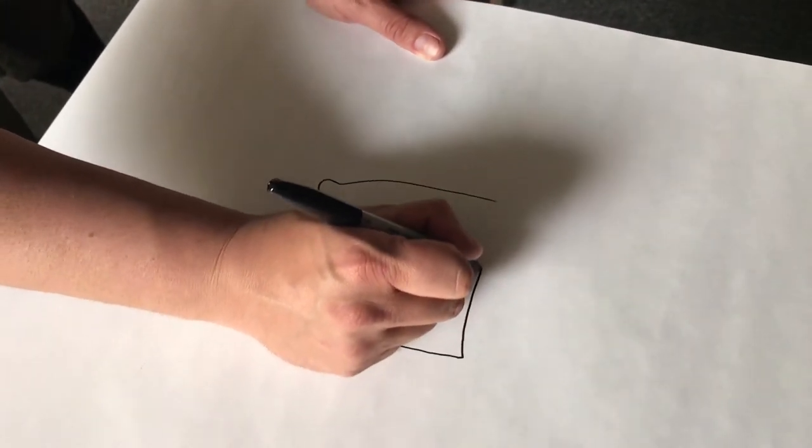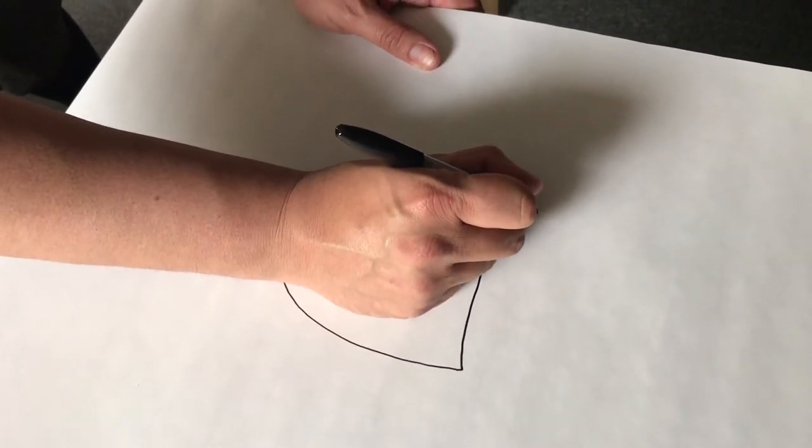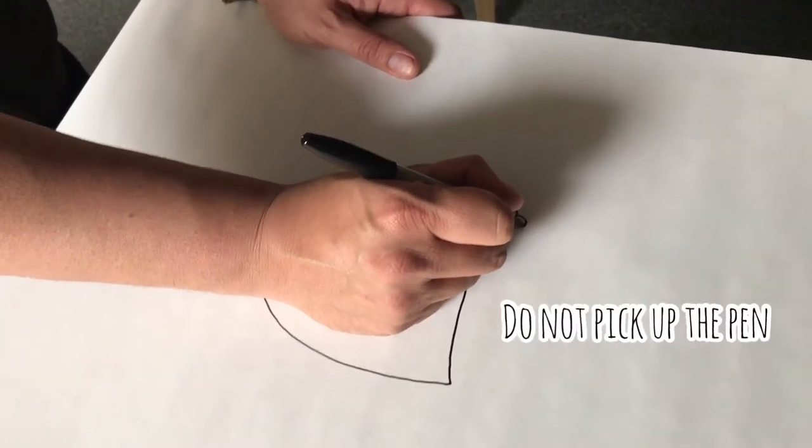And this is where the first arm's going to come. So you're going to go across the body and then you're going to make his little hand, two, three. And remember guys, you cannot pick up your pen. This is a single line.